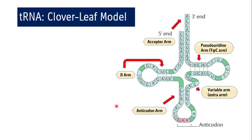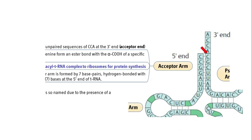All tRNA molecules contain five main arms or loops. In the cloverleaf model, these are: the acceptor arm — where the 5' end and 3' end of the tRNA molecule are located; the D-arm (dihydrouridine arm) with its D-loop; the anticodon arm with its anticodon loop; the TψC arm (pseudouridine arm) with its loop; and the variable arm, also called the extra arm.